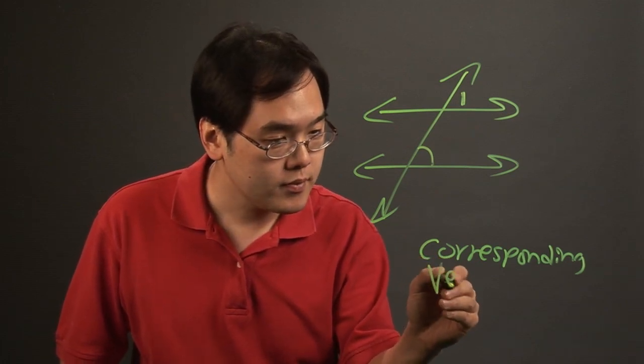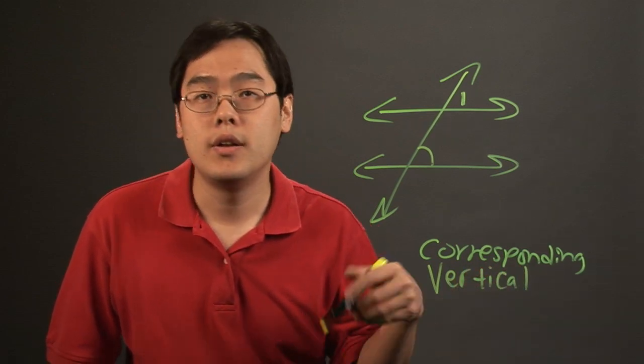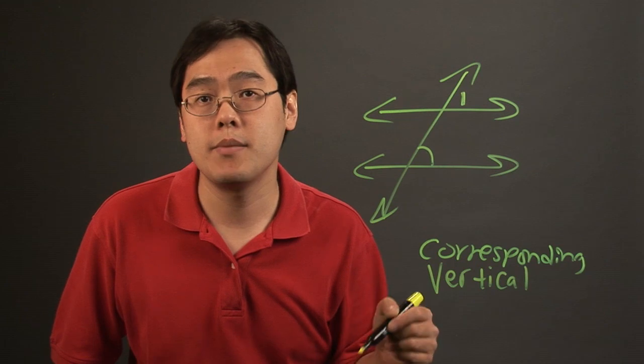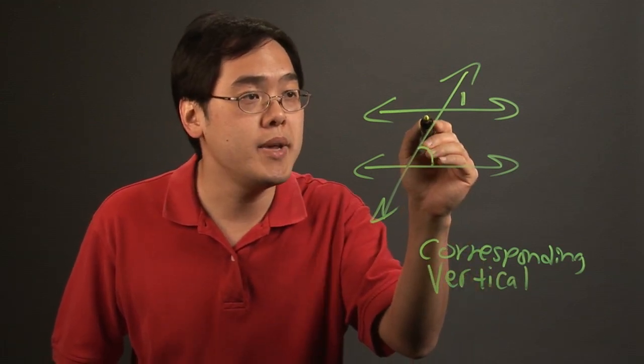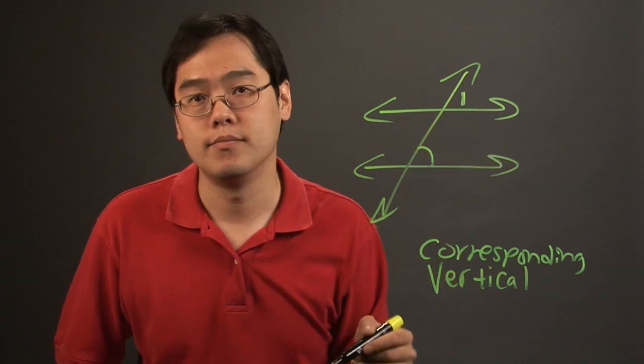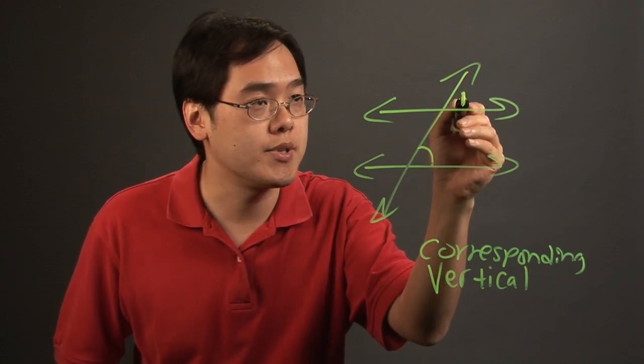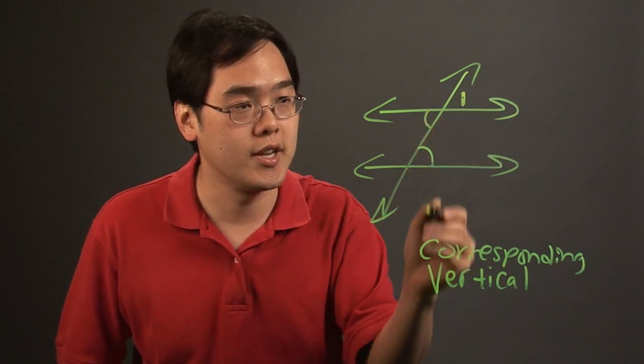Now, another angle that's always going to be congruent to the given angle is that of vertical angles. Sometimes they call them opposite angles, but vertical angles are going to be angles that are immediately opposite the given angle. So for example, this is angle one here. The angle that's opposite this angle is going to be this one. So this angle is going to be congruent to this angle.